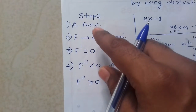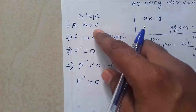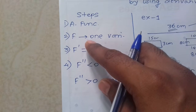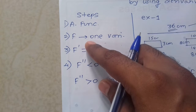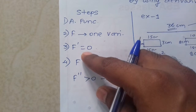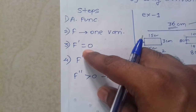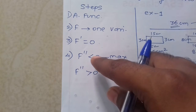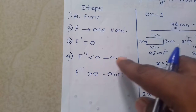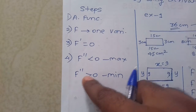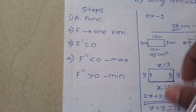The function should have one variable, then pahila derivative chahiya zero. Dousara derivative - if it is less than zero then maxima hai, if it is greater than zero then minimum hai.